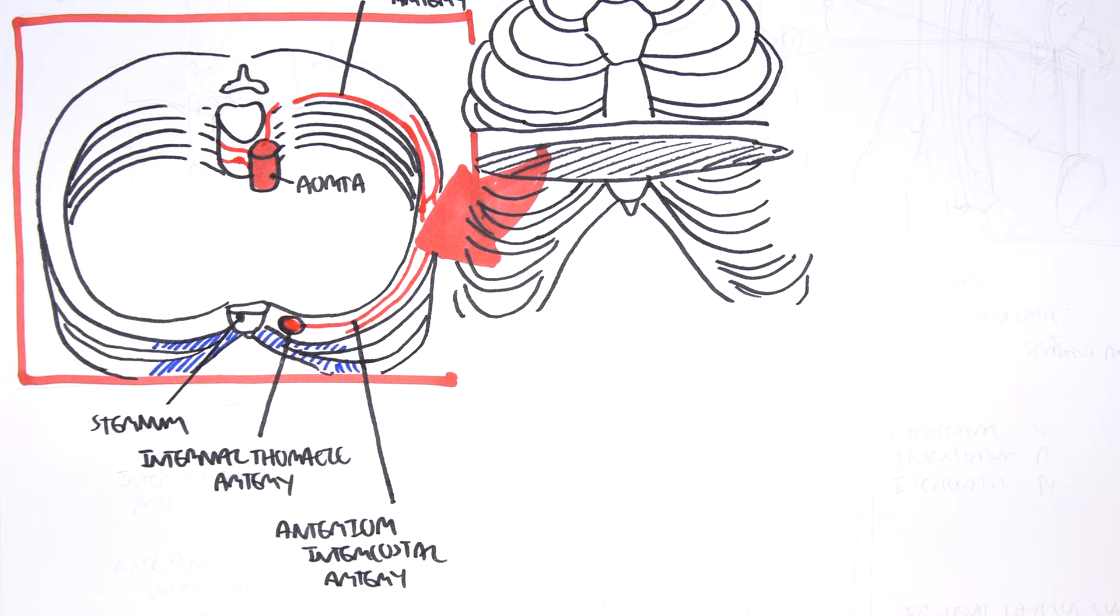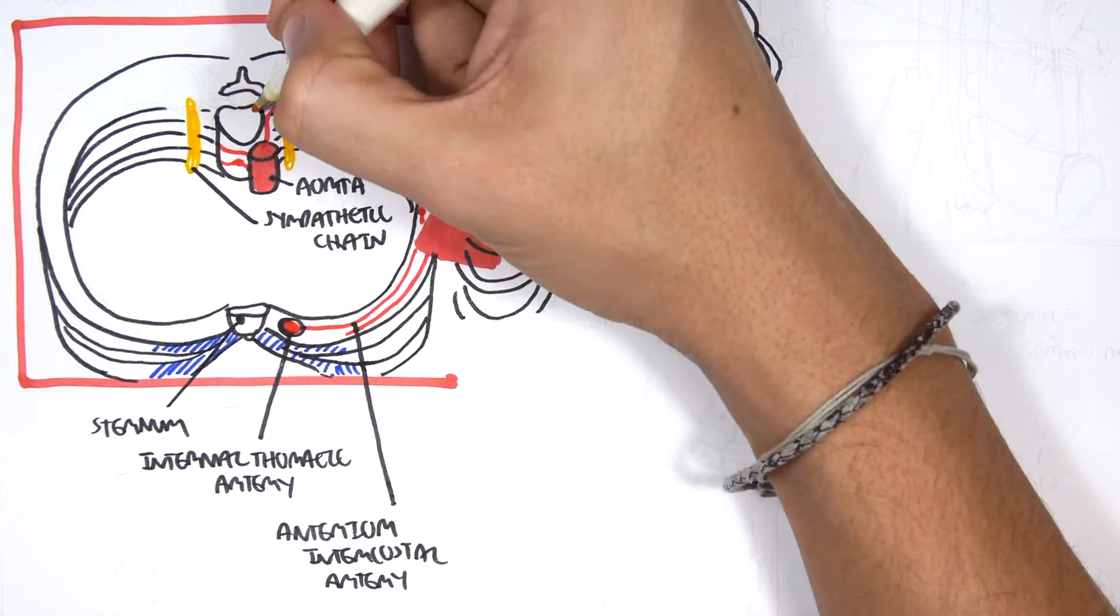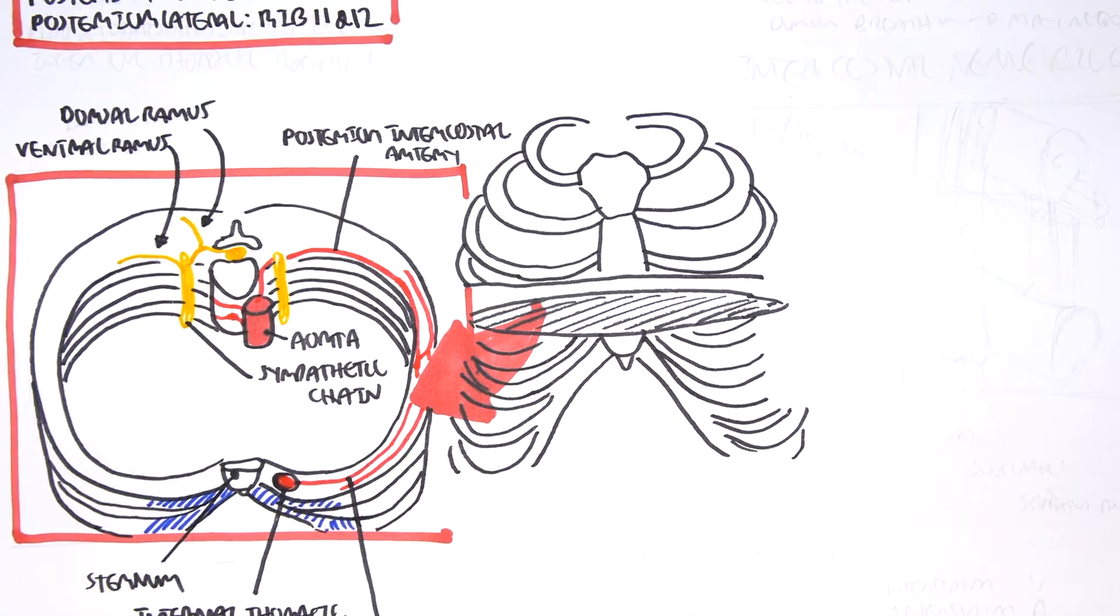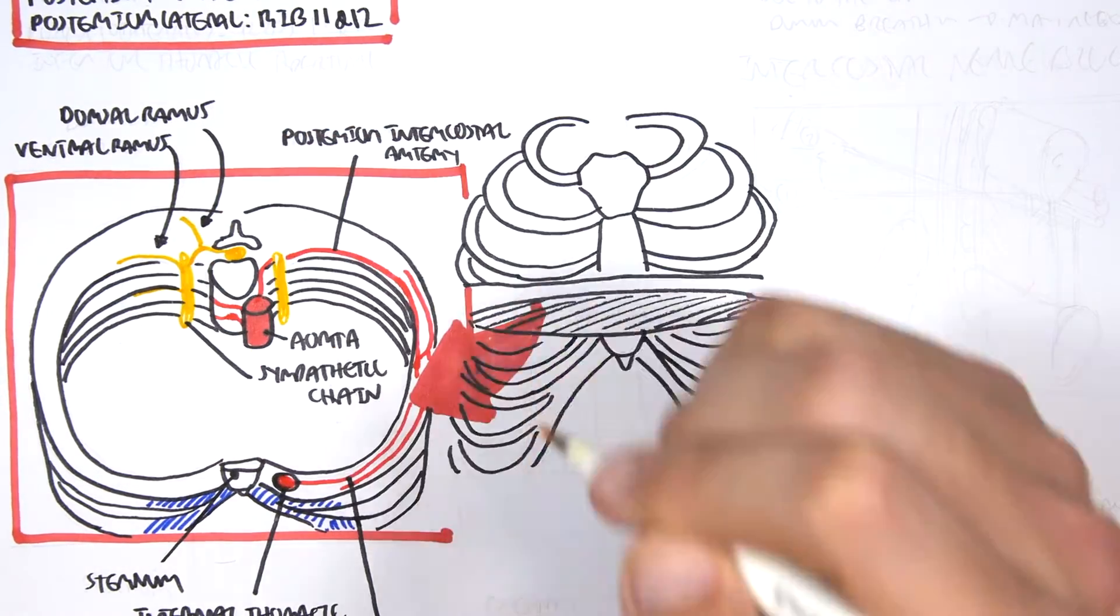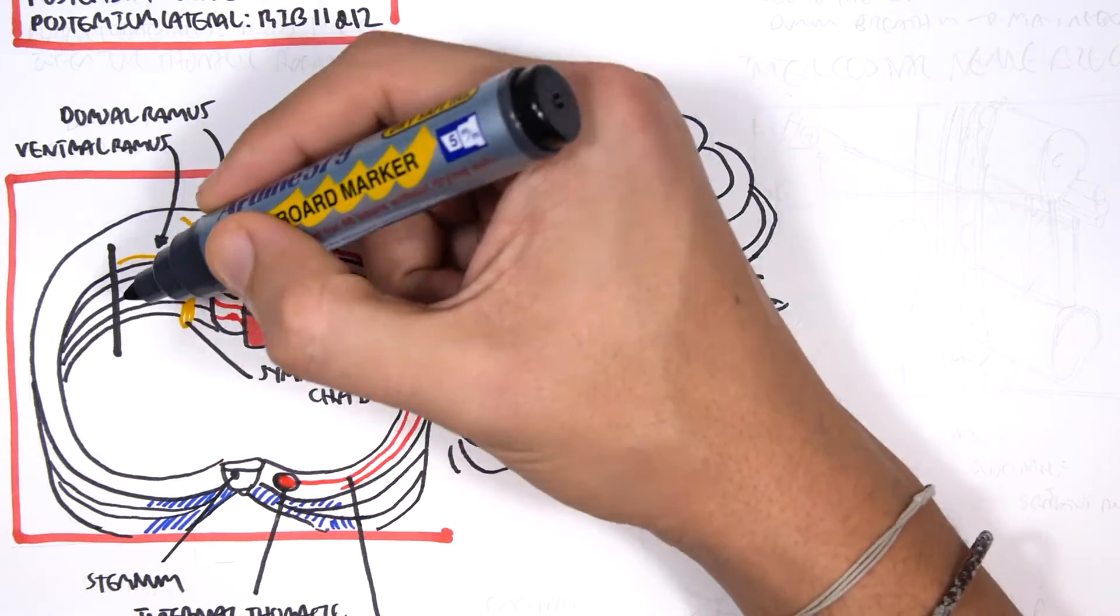So those were the arteries. Let's look at the nerves now. So the nerves, it comes off the sympathetic chain here. We have the dorsal rami and the ventral rami. And these guys essentially form your intercostal nerves. And your intercostal nerves are important because this is how we perform a nerve block, which we'll talk about later.